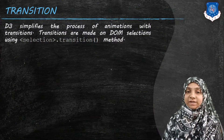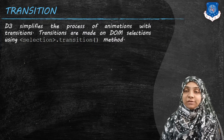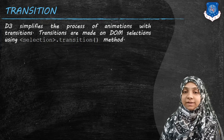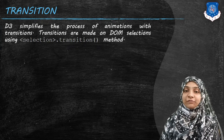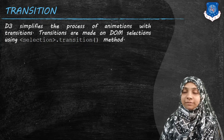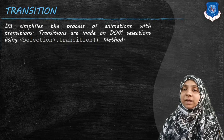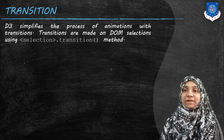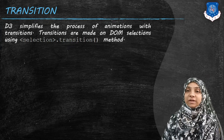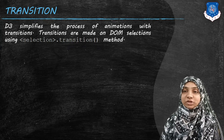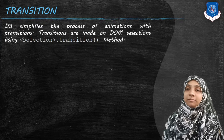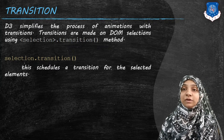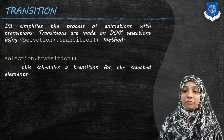In today's video we are going to study transition in detail. The process of animation in D3 is basically performed with the help of transition. Transitions that are made over the DOM selected element are performed using the transition method — we write selection dot transition method.